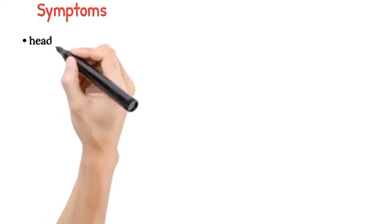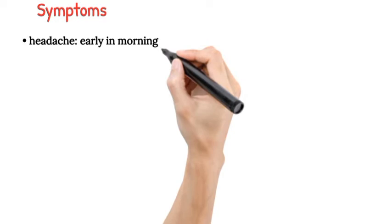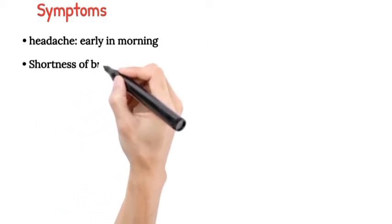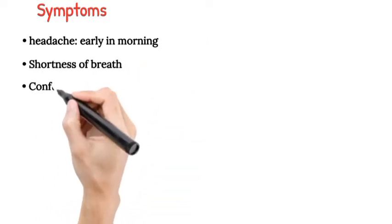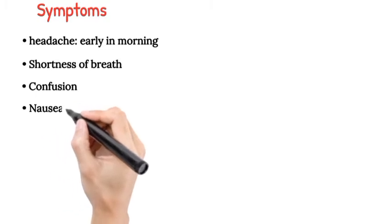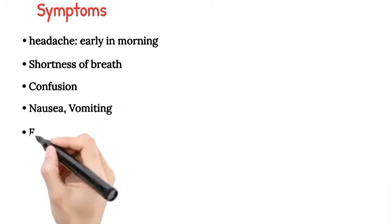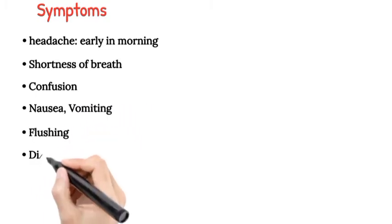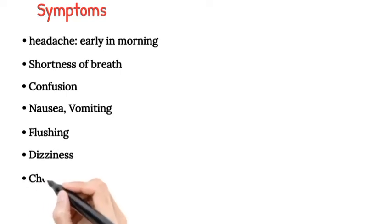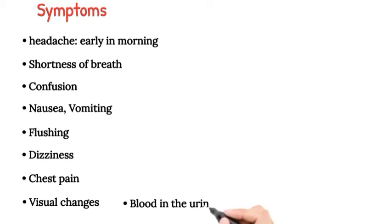Symptoms: Often asymptomatic, hence called the silent killer. Symptoms may include headache early in morning, shortness of breath, confusion, nausea, vomiting, flushing, dizziness, chest pain, visual changes, and blood in the urine.